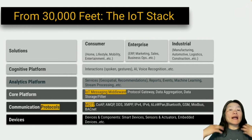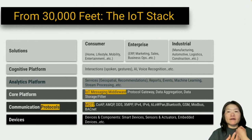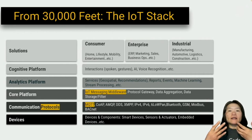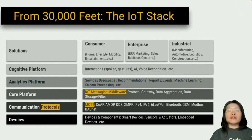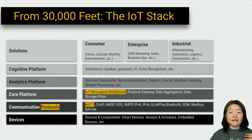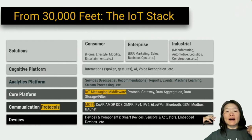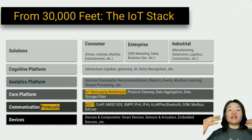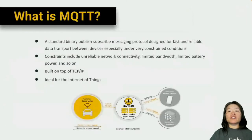The solutions layer covers consumer devices like an Apple Watch that senses how many miles you walk — mobility, lifestyle, entertainment. There are also enterprise-level solutions in marketing, sales, and business. Industrial solutions include automated cars, connected cars, and manufacturing. So the Internet of Things stack covers everything — even your laptop is an Internet of Things device. Pretty exciting stuff.